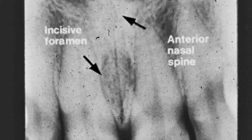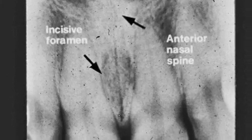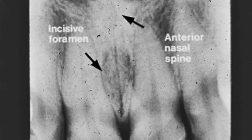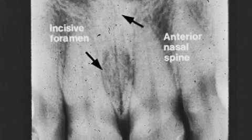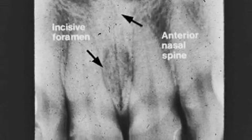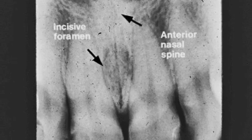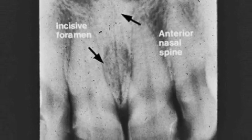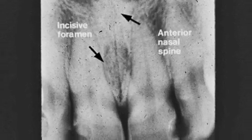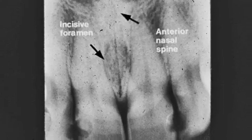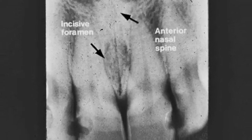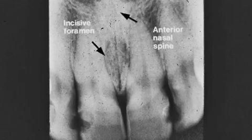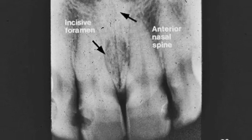The arrow to your left points to the radiolucent oval, which is the incisive or palatine foramen. The arrow above that is the anterior nasal spine. It is radiopaque and is diamond-shaped, or like the back of a bat or a turtle.